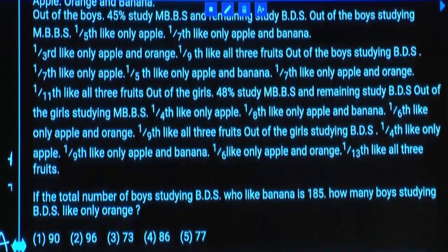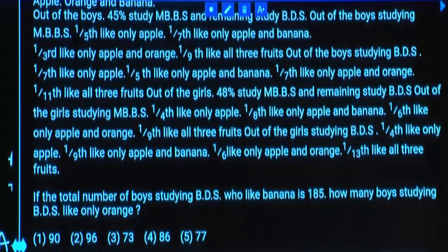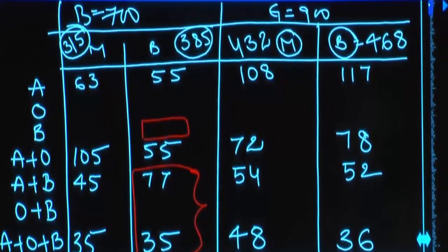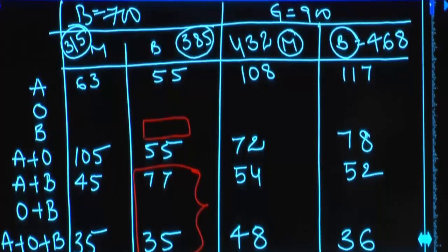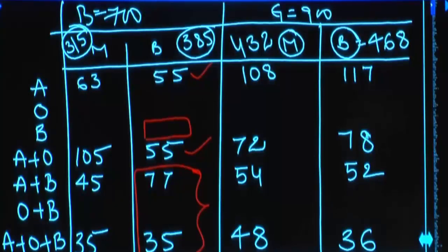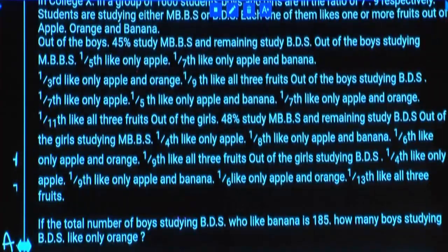If the total number of boys studying BDS who like banana is 185, how many boys studying BDS like only orange? Wherever banana appears, we consider it. So three values plus one value equal 185. The other two numbers are 55 and 55, totaling 110. 110 plus 185 is 295. Total BDS boys is 385, and 295 are accounted for, so remaining 90 like only orange.